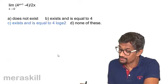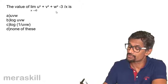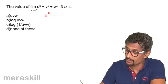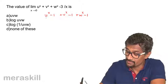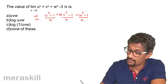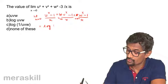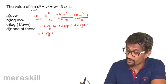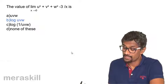Finally, we find the limit of (u^x + v^x + w^x - 3)/x as x tends to 0. We split minus 3 as minus 1 minus 1 minus 1, giving (u^x - 1)/x + (v^x - 1)/x + (w^x - 1)/x. Each term applies the formula directly, yielding log u + log v + log w to the base e, which equals log(uvw) to the base e.